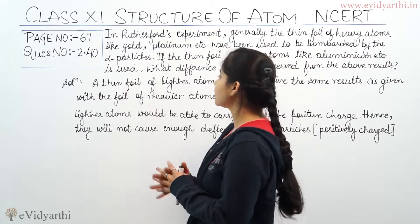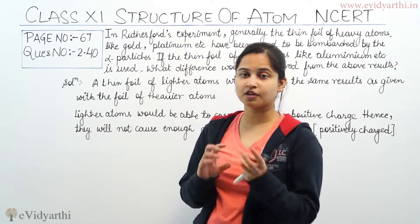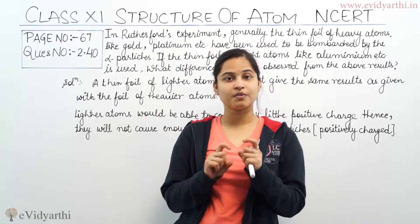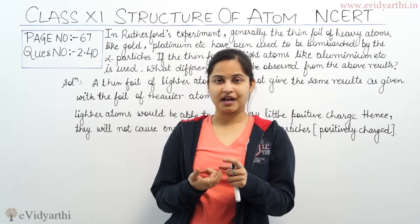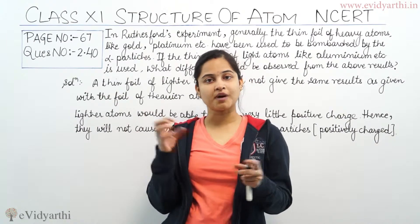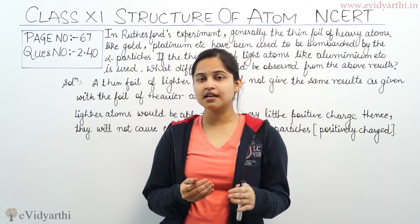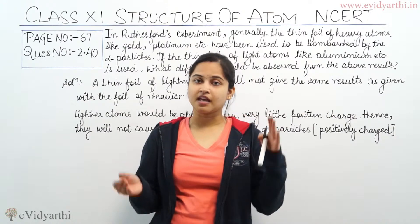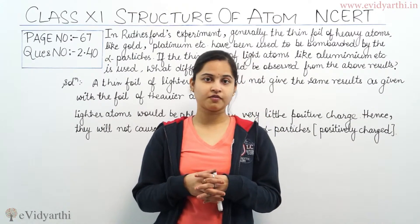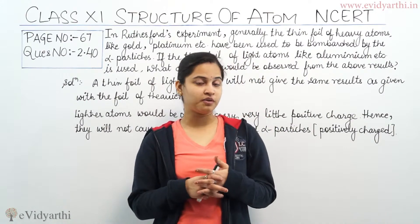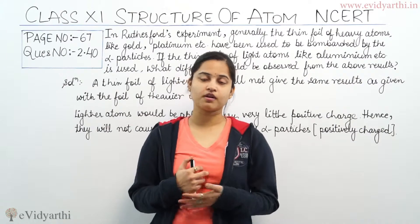So, in Rutherford's experiment, we use a thin foil of heavy atoms like gold and platinum to be bombarded with the alpha particles. But if we use light atoms instead — for example, aluminium — then what difference would be observed from the above results?